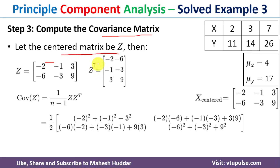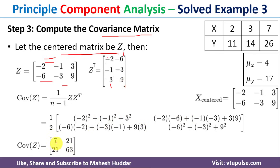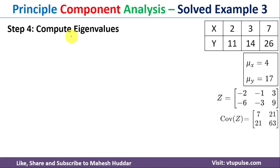Next we perform matrix multiplication of Z and Z-transpose. Multiplying the first row by the first column: (−2)² + (−1)² + 3² = 14. First row by second column: (−2)(−6) + (−1)(−3) + 3×9 = 42. Similarly for the second row. Multiplying by 1/2, we get the covariance matrix: [[7, 21], [21, 63]].